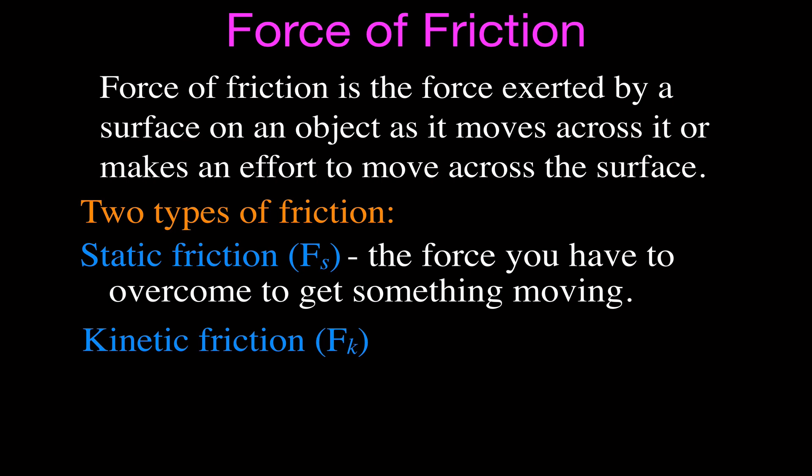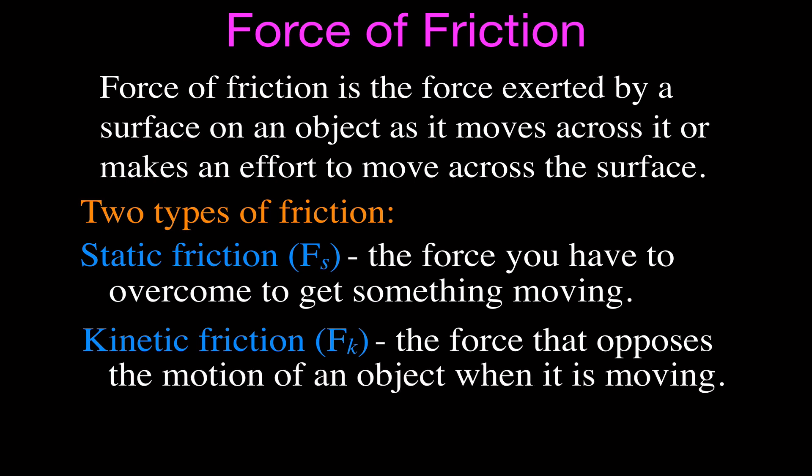Static friction is the force you have to overcome to get something moving. If you push something big, heavy, massive — a car, a big table, a big chair, a big box — it doesn't start moving right away because static friction is keeping the object from actually moving. You have to overcome that static friction. Kinetic friction is the force from the surface that opposes the motion of the object when it is actually moving — kind of like trying to slow it down.